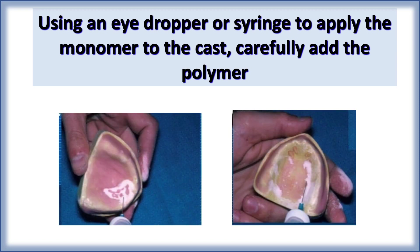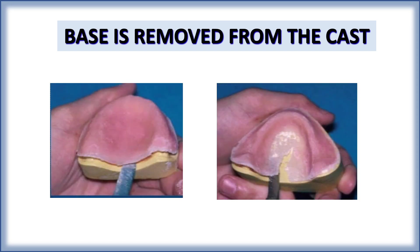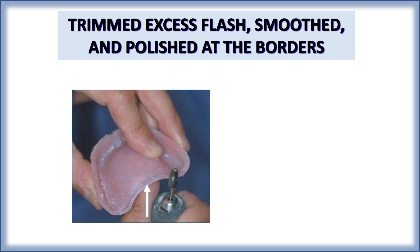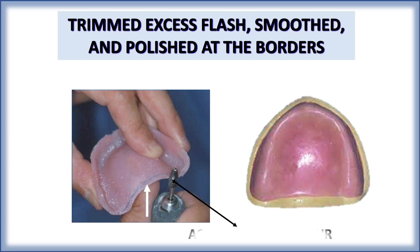Using a syringe or dropper, apply monomer and carefully sprinkle polymer step by step — alternating polymer and monomer — until the entire model is covered with resin. Once covered, remove the base from the cast, trim the excess with an acrylic trimming bur, then smoothen and polish the border with buff and pumice.